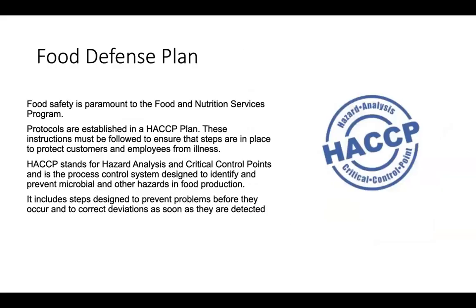Food Defense Plan. Food safety is paramount to the Food and Nutrition Services Program. Protocols are established in a HACCP plan. These instructions must be followed to ensure that steps are in place to protect customers and employees from illness. HACCP stands for Hazard Analysis and Critical Control Points and is a process control system designed to identify and prevent microbial and other hazards in food production. It includes steps designed to prevent problems before they occur and to correct deviations as soon as they are detected.